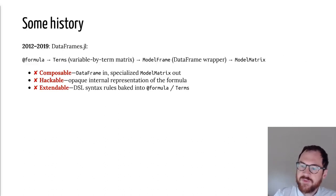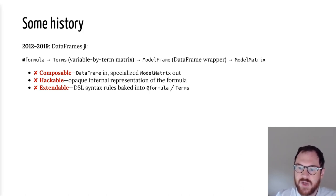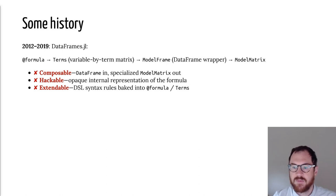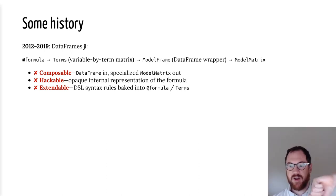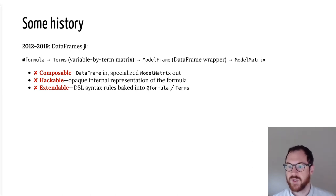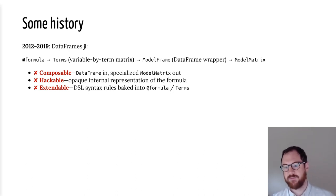Some history: development on the formula started back in 2012. One of the earliest Julia packages is DataFrames.jl, and it had a formula macro that would create a term structure — literally a Boolean matrix representing, for every combination of variable and term in the formula (like one plus a plus b plus a-and-b), whether that variable occurred in that term. So it could represent things like main effects and interactions of variables, but nothing else.